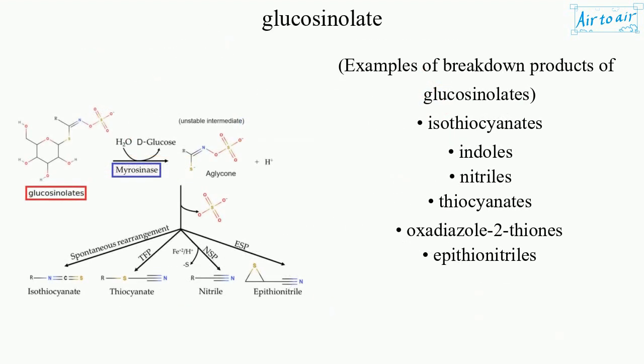Examples of breakdown products of glucosinolates: isothiocyanates, indoles, nitriles, thiocyanates, oxadiazole-2-thiones, epithionitriles.